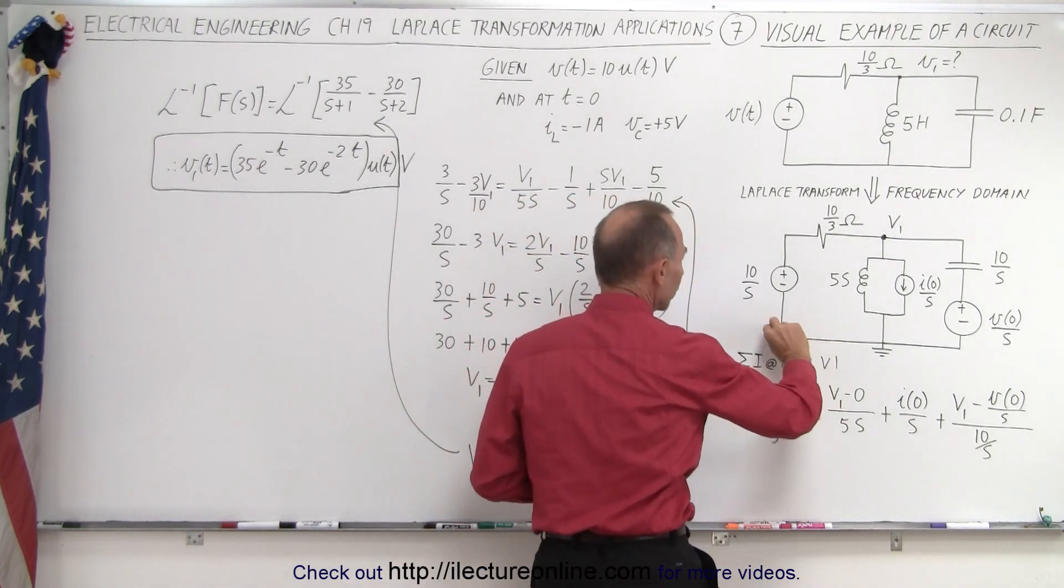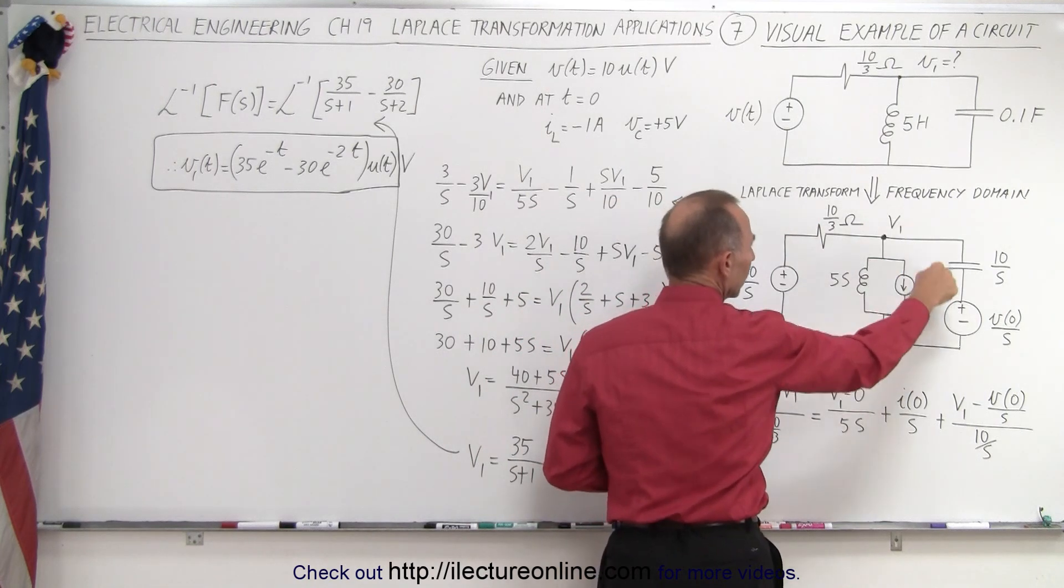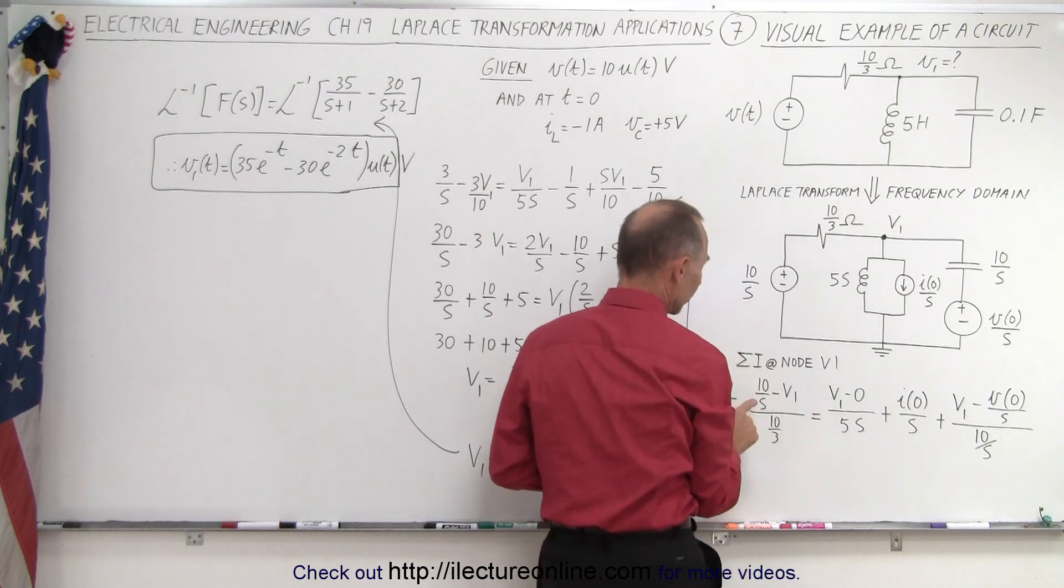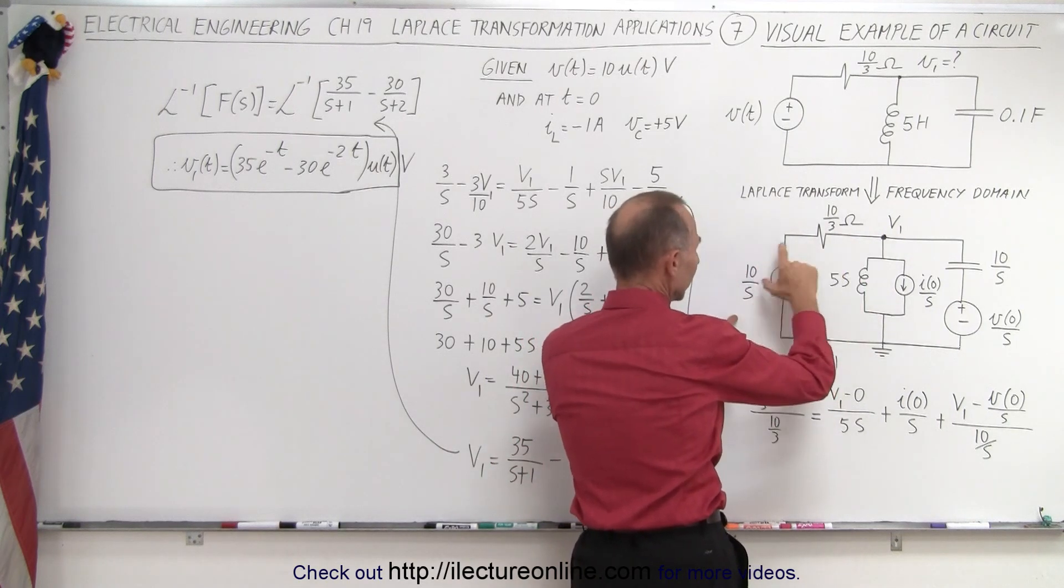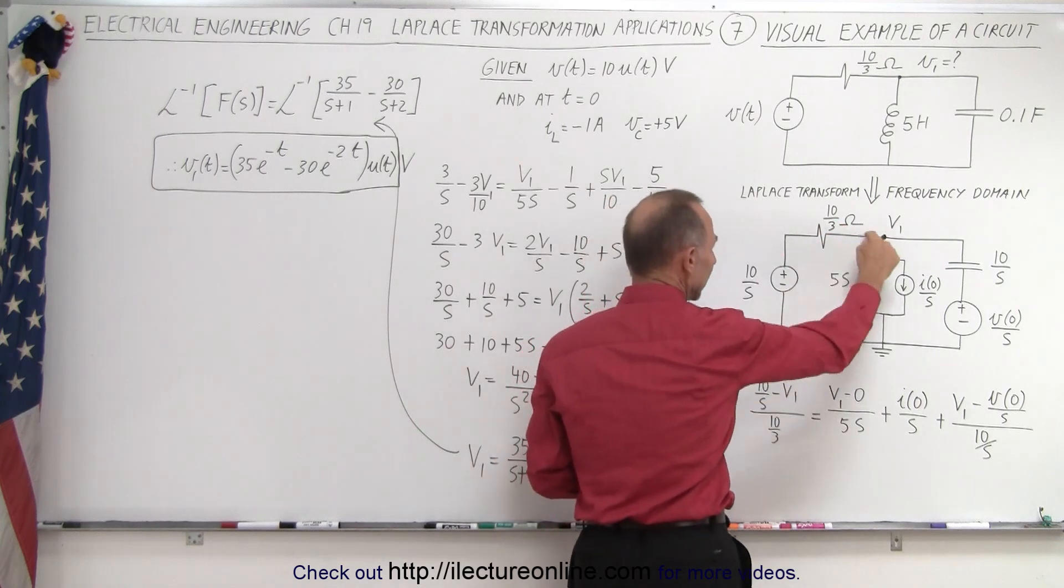We take all the currents going into that node equals all the currents leaving the node. The current entering the node is the voltage difference: 10/S minus V1 divided by the resistance here. That's the current leading into the node.